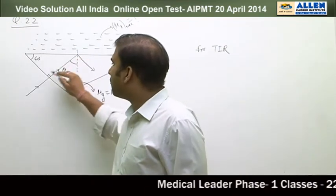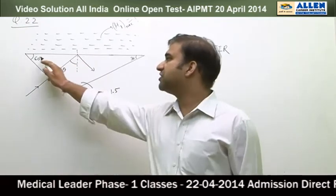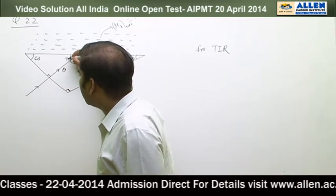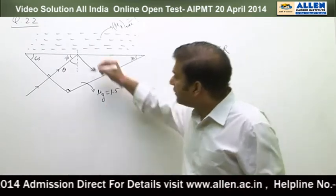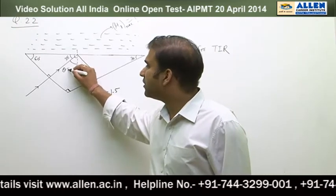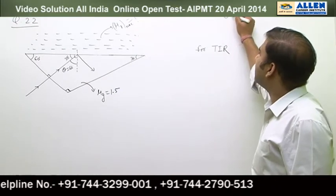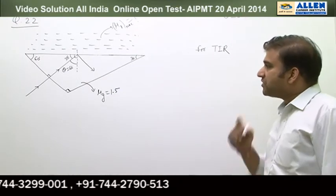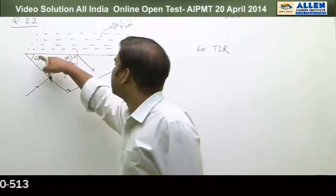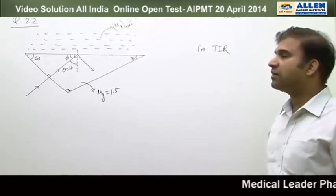As the sum of all three angles of a triangle is 180 degrees, this angle is 60, this is 90, so that it must be 30 degrees. This angle must be 90 degrees, so 90 minus 30 is 60 degrees. Therefore, theta is exactly equal to 60 degrees. Total internal reflection takes place at this surface — the boundary of liquid and glass.